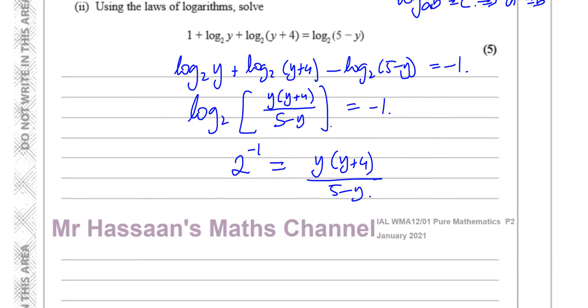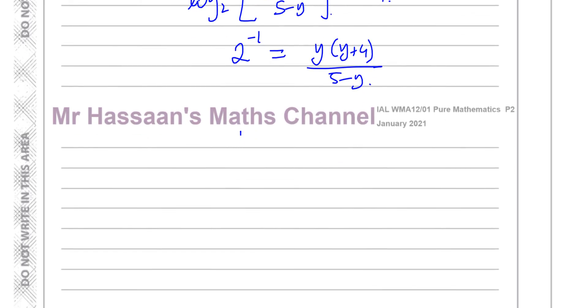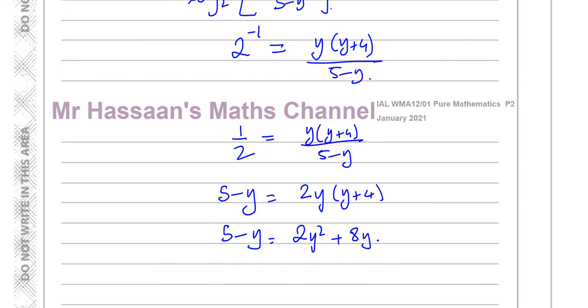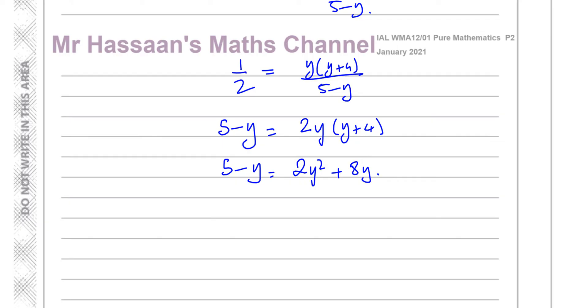So now I can just solve this equation. So what I can do is this is like 1 over 2 equals y, y plus 4, and 5 minus y. I can cross multiply. So I have 5 minus y times 1, and I have 2y times y plus 4. I can expand the brackets. This is going to give me 2y squared plus 8y. I can bring all the y's on one side, everything on one side, because I've got a quadratic. So I'll say 0 equals 2y squared plus 9y minus 5.